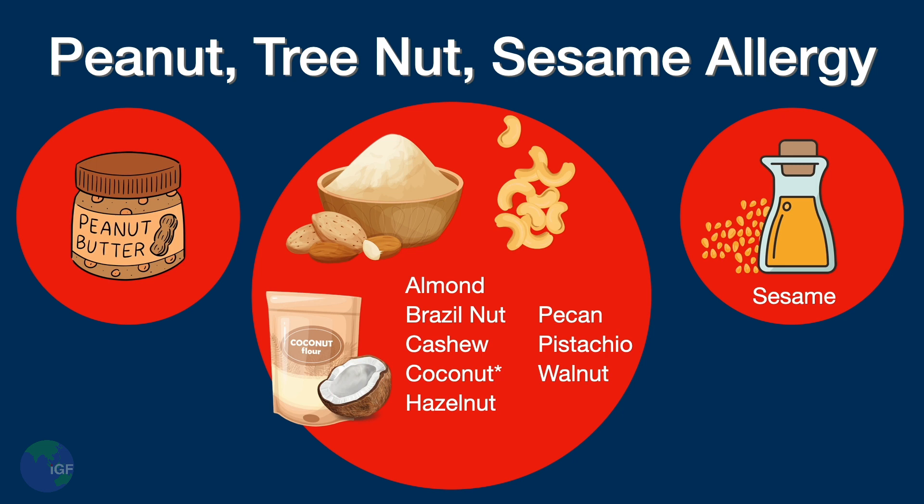Coconuts are in the tree nut family, although they are not as common as an allergen. Sesame is another serious allergen — this includes sesame oil and sesame seeds. These tend to be three separate allergies. Some people with a peanut allergy can eat tree nuts, and vice versa.